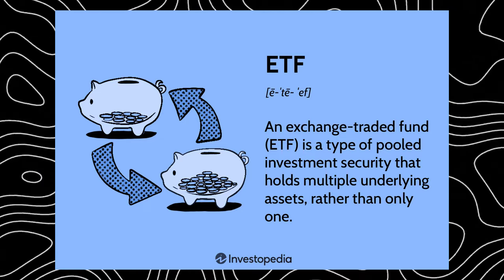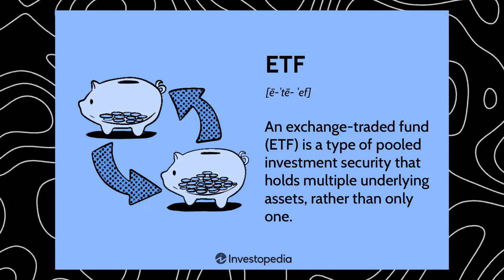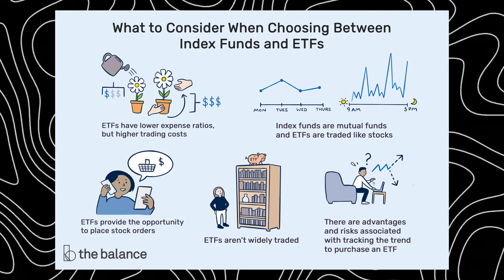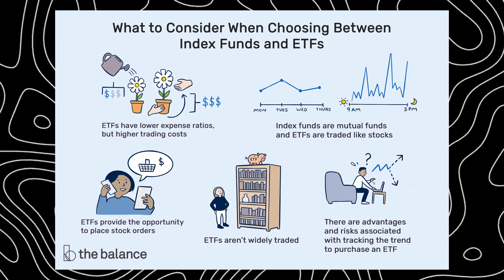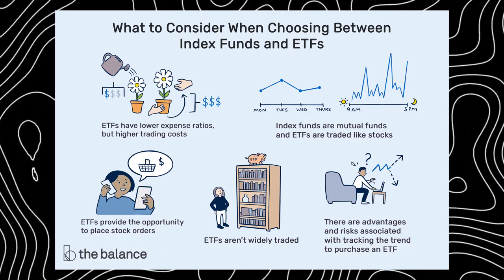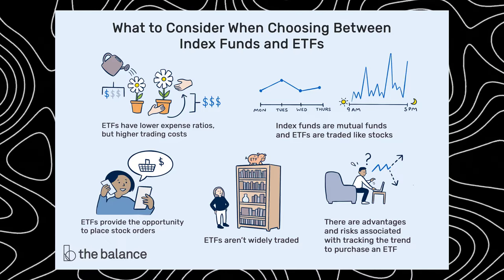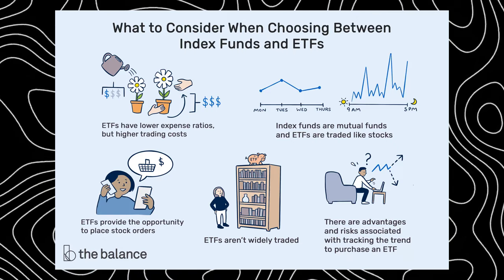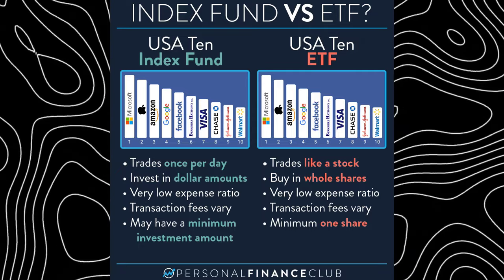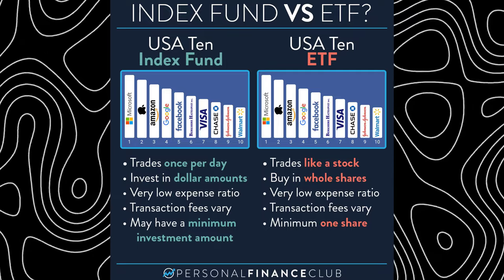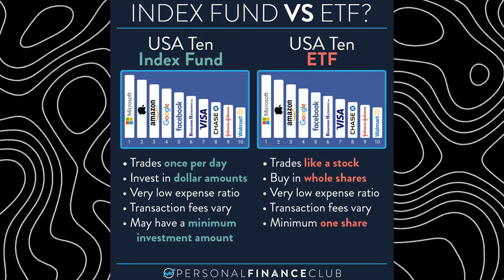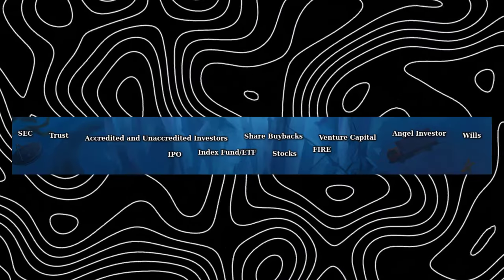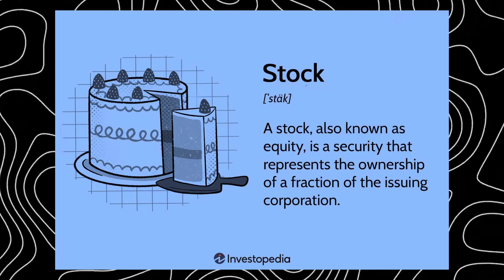Index funds and ETFs: I bundled these together as they offer a similar way to invest in a broader market. These funds are a gateway to investing in the stock market without putting all your eggs in one basket — they provide diversification benefits. Instead of investing in a single company's stock, an index fund or ETF lets you receive returns from multiple stocks, mirroring indices like the S&P 500. Some funds like Vanguard's global ticker VT have as many as 10,000 holdings — an excellent choice for long-term beginning investors.